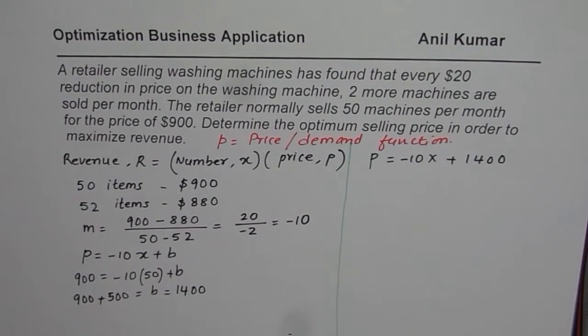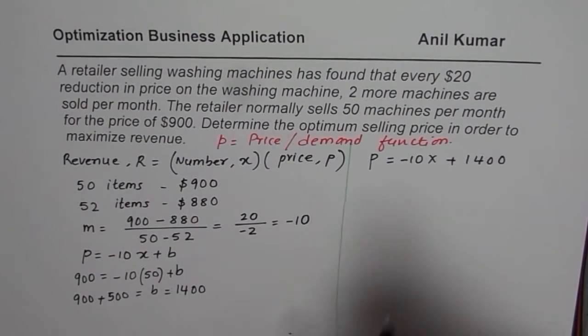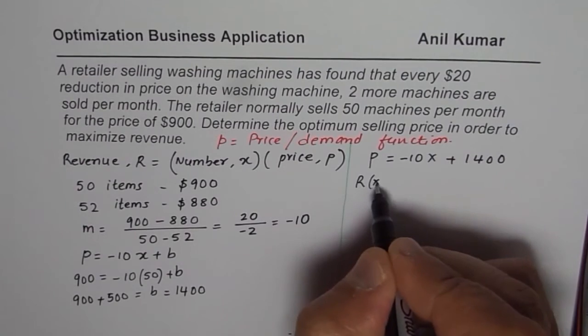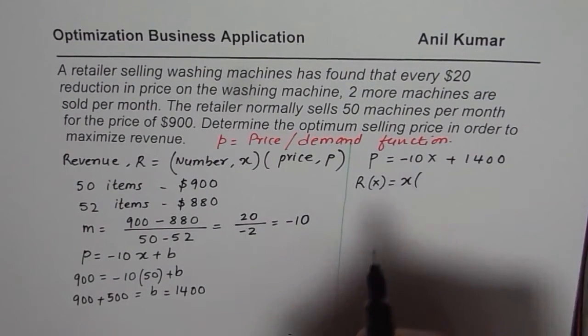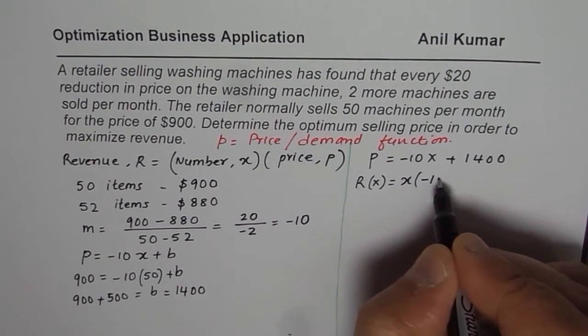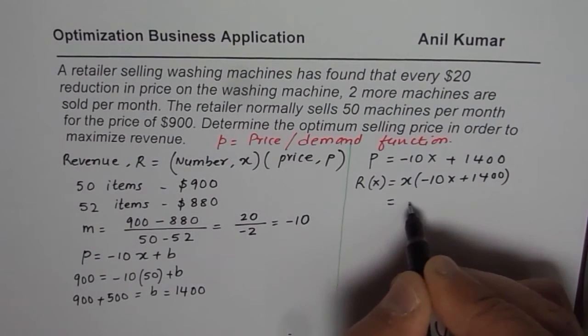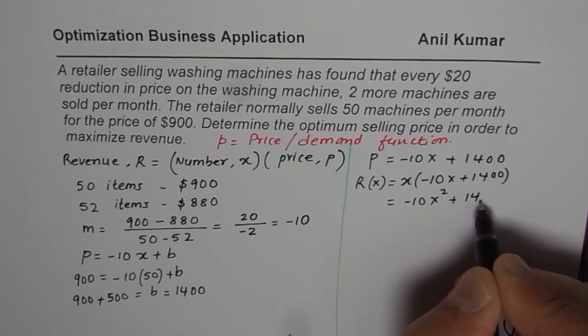Now, what is revenue? Revenue, as you know, is number of items sold into price function. So we say revenue will be in terms of X, number of items sold can be X times the price function which is minus 10X plus 1400. That we could write as minus 10X squared plus 1400X.